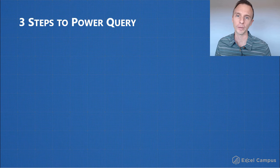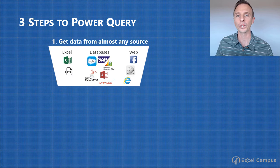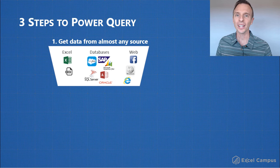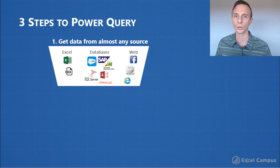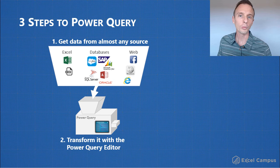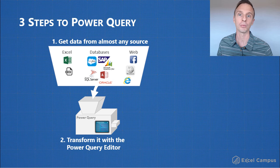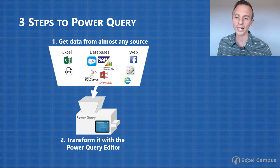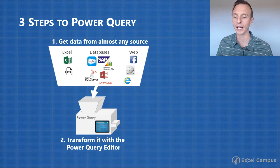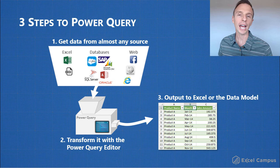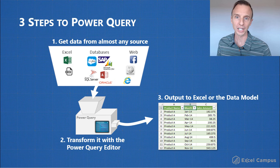There are really three steps to Power Query. The first step is to get data from almost any data source — Excel, CSV files, databases, and even websites. We then transform the data with the Power Query editor, which is built into Excel and Power BI and was built by Microsoft. Then we output the data to Excel or the data model.